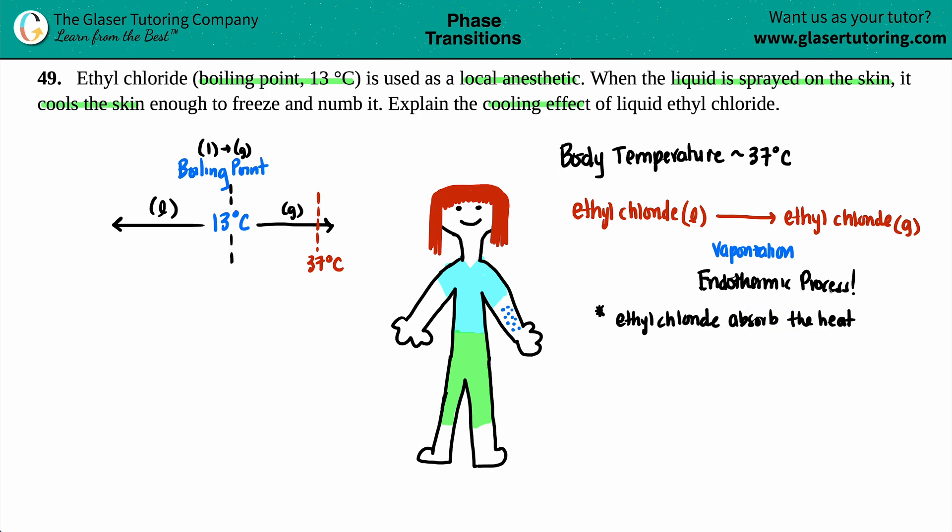We know that heat cannot be created nor destroyed - it's just like matter, it just has to be transferred. So if ethyl chloride is absorbing the heat because the process is endothermic, that means somewhere else is losing. And the only two things that are coming in contact with each other is the ethyl chloride being sprayed on the skin.